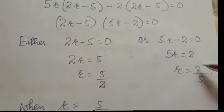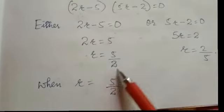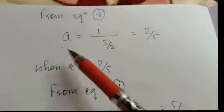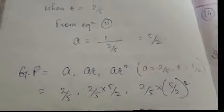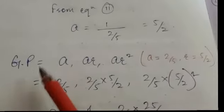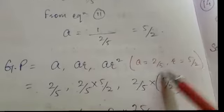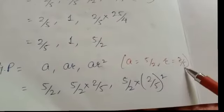We find value of a for each r. When r equals 5 by 2, a equals 2 by 5. When r equals 2 by 5, a equals 5 by 2. We get two sets of GP. First GP: a equals 2 by 5 and r equals 5 by 2. Second GP: a equals 5 by 2 and r equals 2 by 5. Both give valid sequences as the answer.